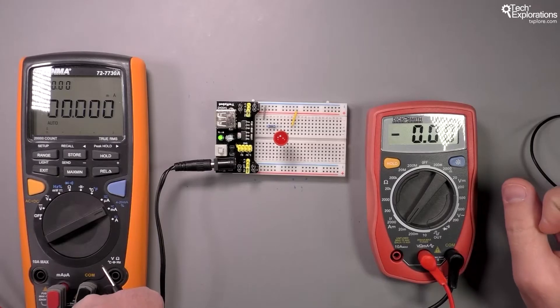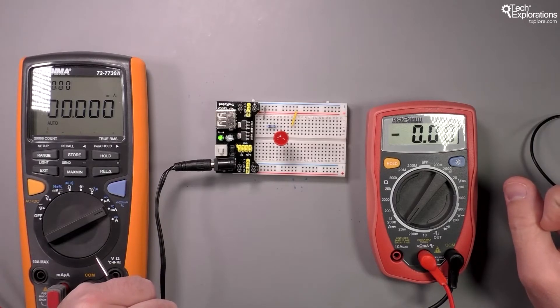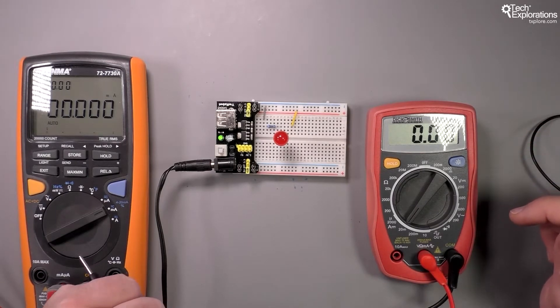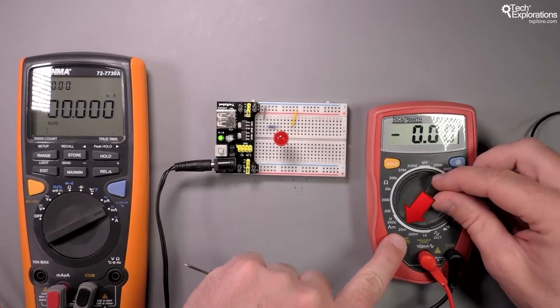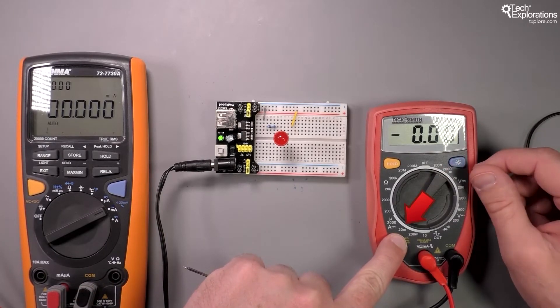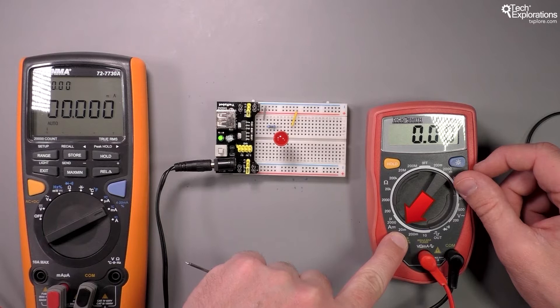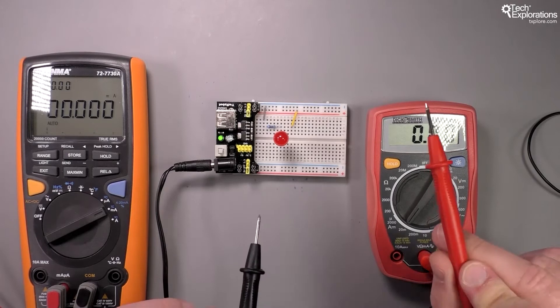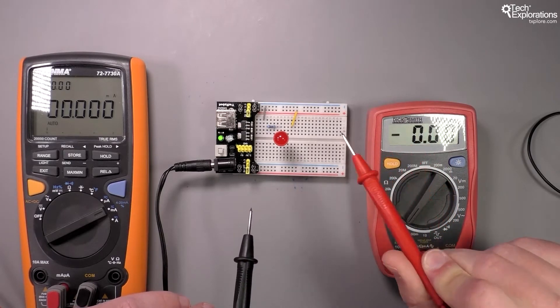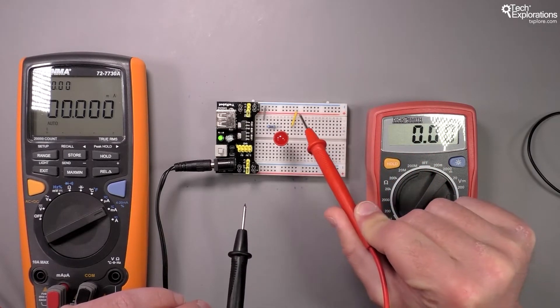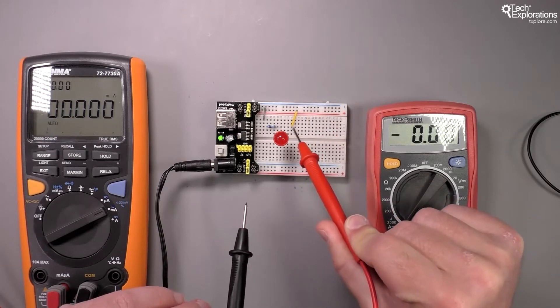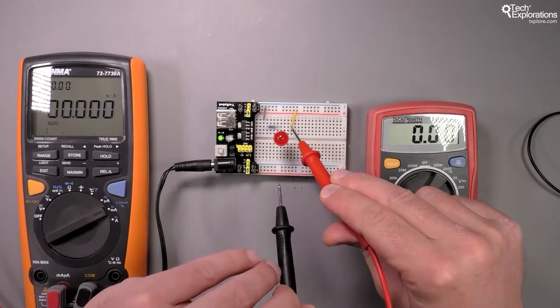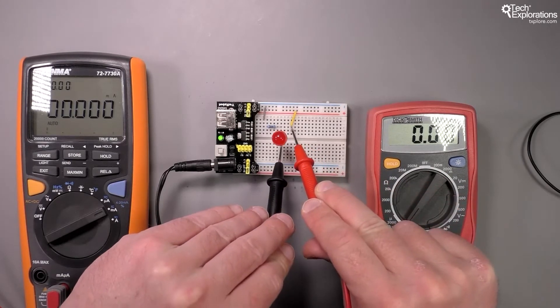I guess the current here is just a few milliamps, probably less than 10 milliamps. I'm switching my multimeter to the 20 milliamp range and connecting my probes now. I'll connect the red probe closer to the red rail, plugging it at the free end of the yellow jumper wire, and the black one on the anode of the LED.